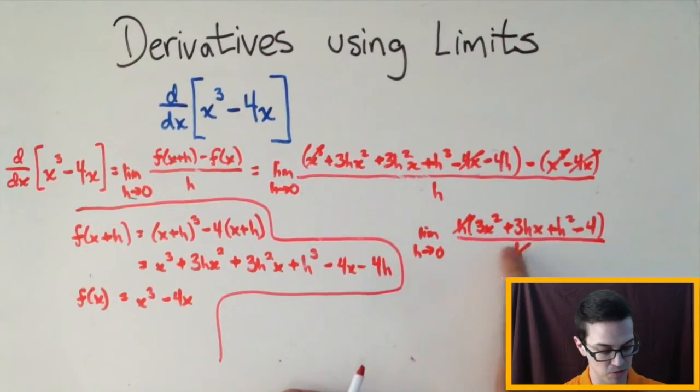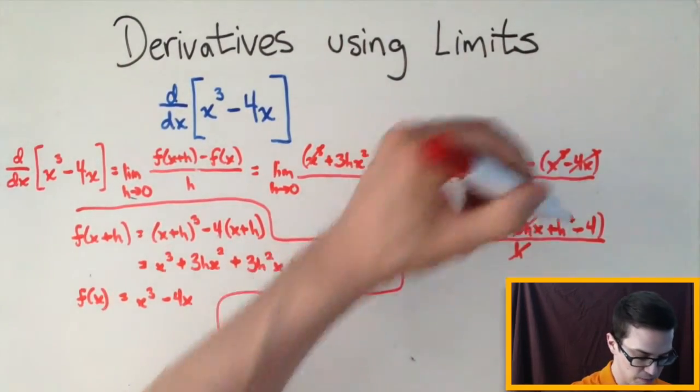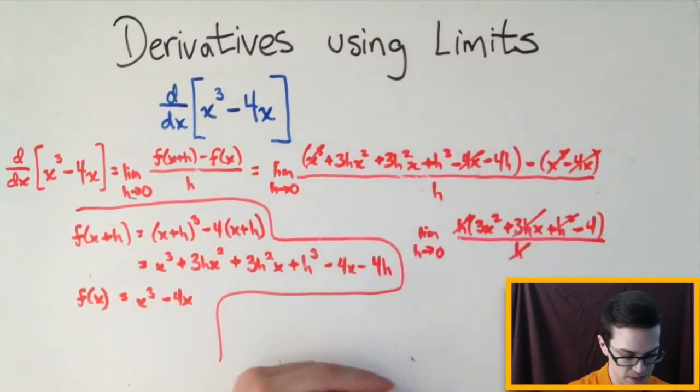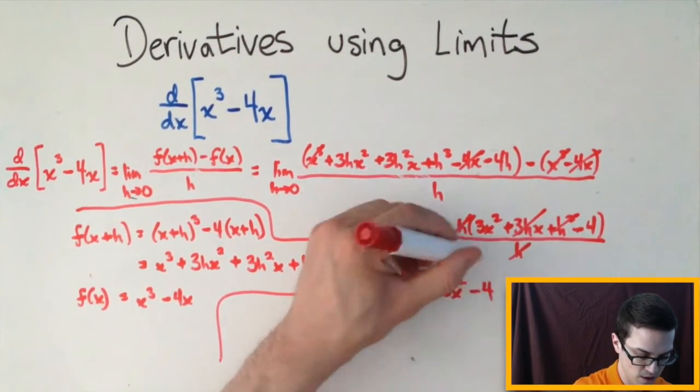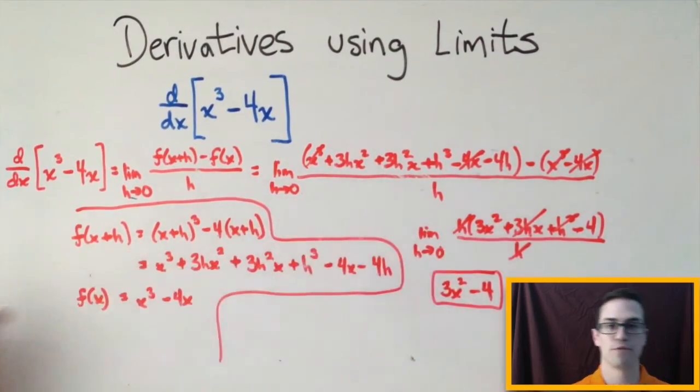I'm going to directly substitute the 0 in here. So this would end up being 0. This h squared would end up being 0. And then you're left with 3x squared minus 4 as your final answer for the derivative.